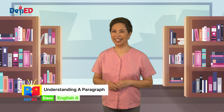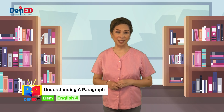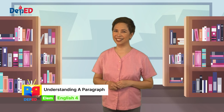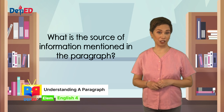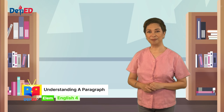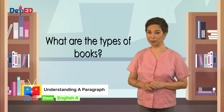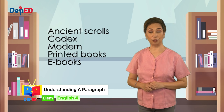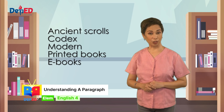Were you able to understand the paragraphs that we have read? Let us now try to answer the following questions based on what we have read. What is the source of information mentioned in the paragraph? The answer is books. Next question: what are the types of books? Based on the second paragraph, there have been various types of books like ancient scrolls, codices, modern printed books, and electronic books or e-books.